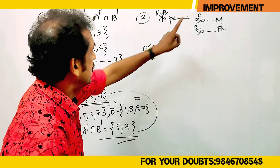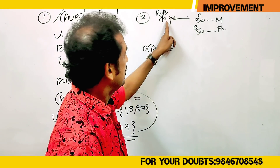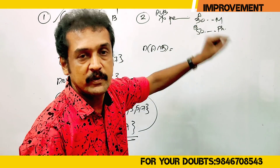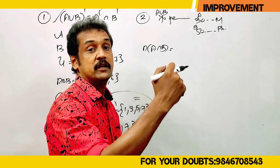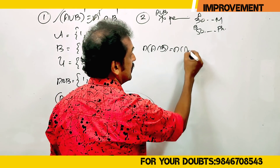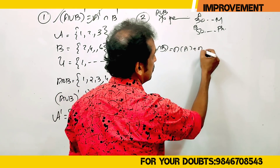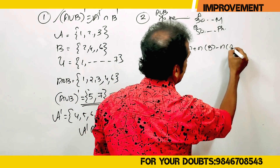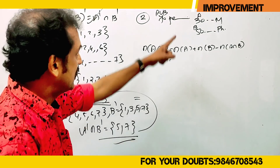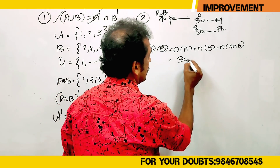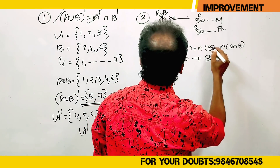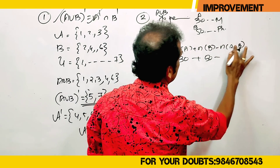This is n(A), n(B), n(A union B). The formula is: n(A intersection B) equals n(A) plus n(B) minus n(A union B). That is 30 plus 50 minus n(A union B). n(A union B) is 70.